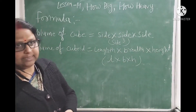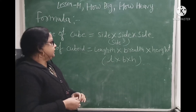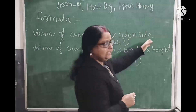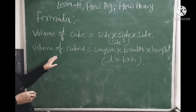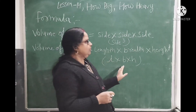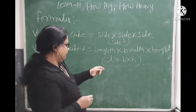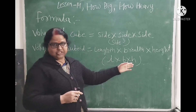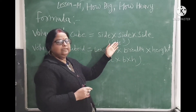The cube is a 3D shape, so its formula is side into side into side. The volume of the cuboid — its formula is length into breadth into height, and we can write it in short form as L into B into H. We can refer to the cube by its side.